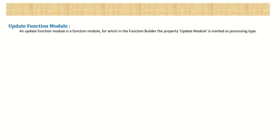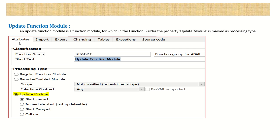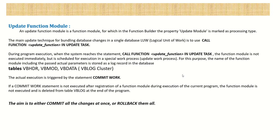In this session we will learn the next topic in the function model in RFC: the update function model. An update function module is one for which, in the function builder, the property 'update module' is marked as the processing type. When we log into SE37, on the attributes tab, the radio button 'Regular FM' is selected by default, then 'Remote Enable', and after that we can see 'Update Module'. If we want to make any function module an update FM, we select this radio button.